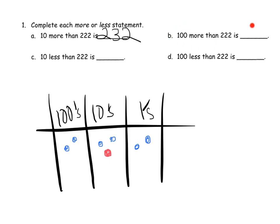Question B: 100 more than 222. Well, in that case, instead of having this extra dot here, we're back to 222. Now we want 100 more than 222 — that would mean we'd add a dot here in the 100s column. So now we have 322. Teachers and parents, if the students don't need to explicitly draw this out and they could do it in their head, that's the point. So they don't need to show their work using these place value charts. Let them go ahead and just mentally do this math.